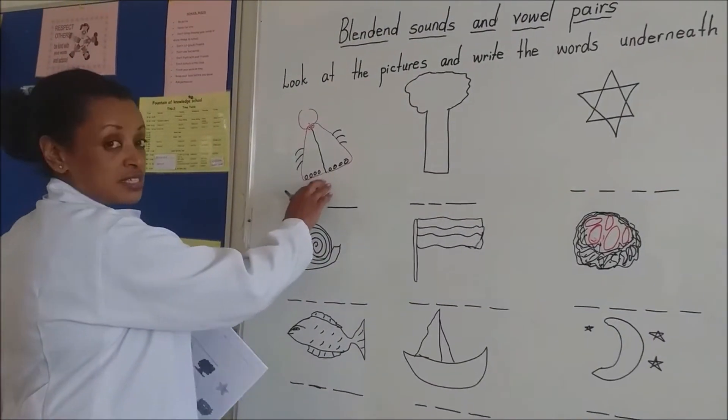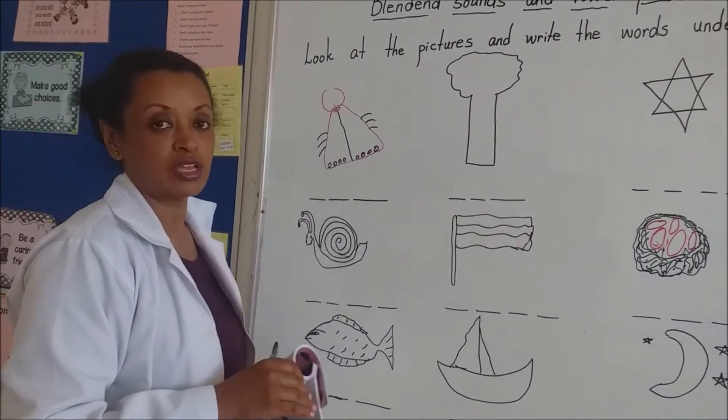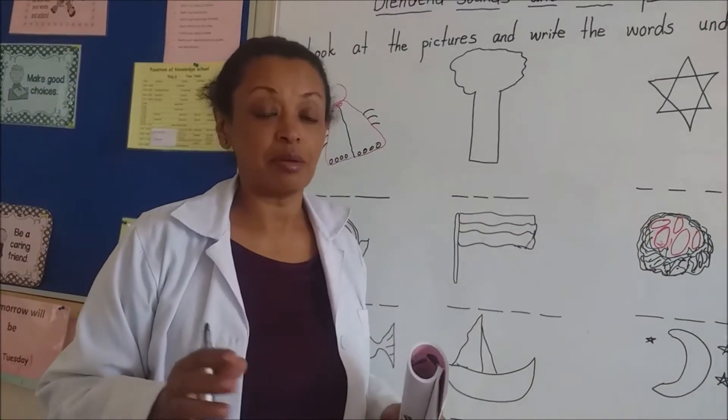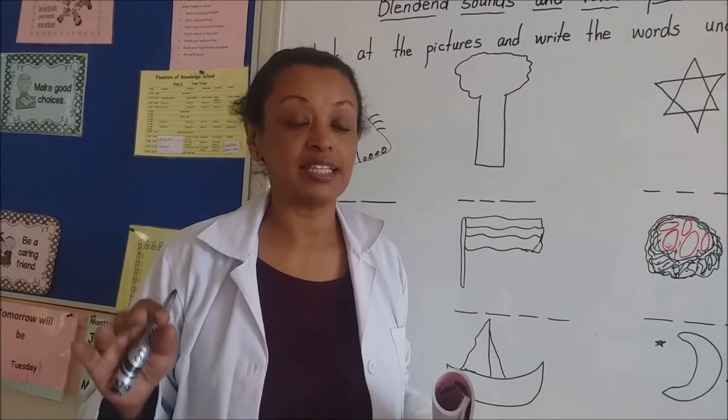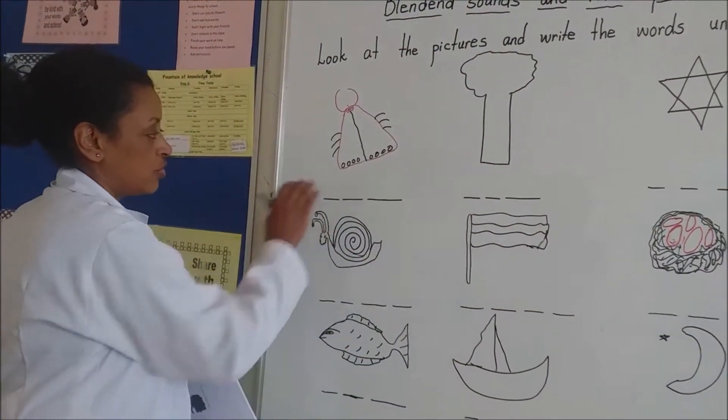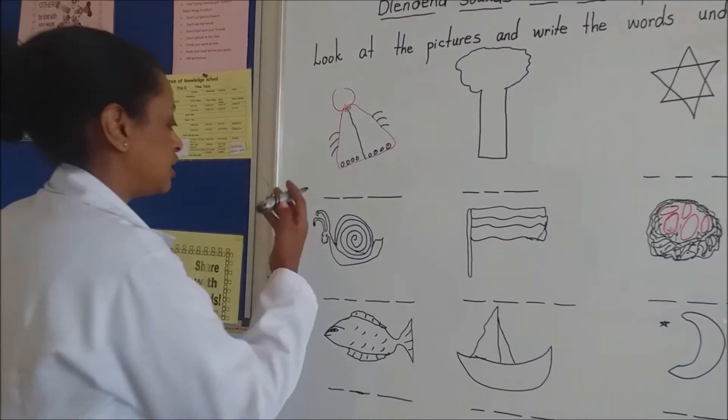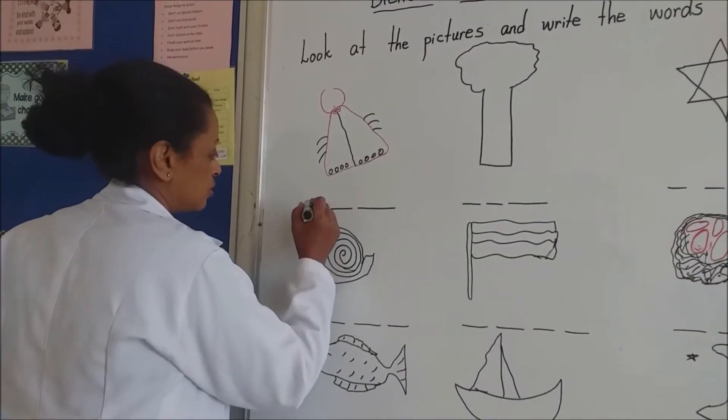What is this? It's a moth. You know moth? A moth is like a butterfly. Mostly it comes at night time only. It's a moth. How do we write moth? Let me show you.